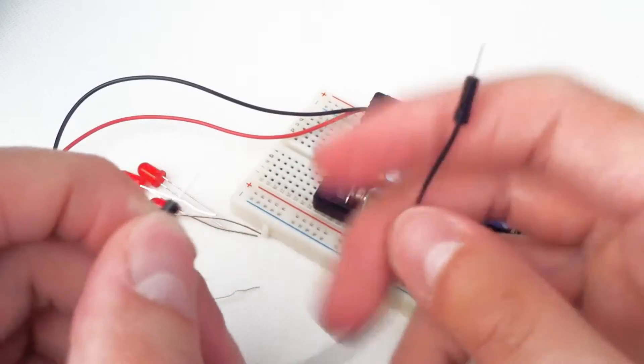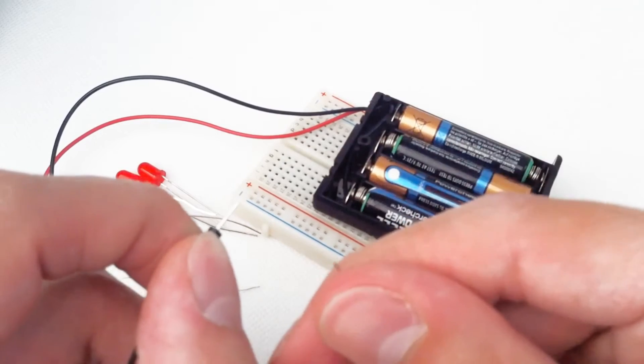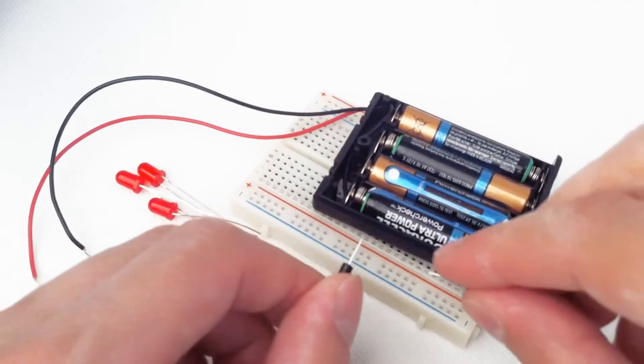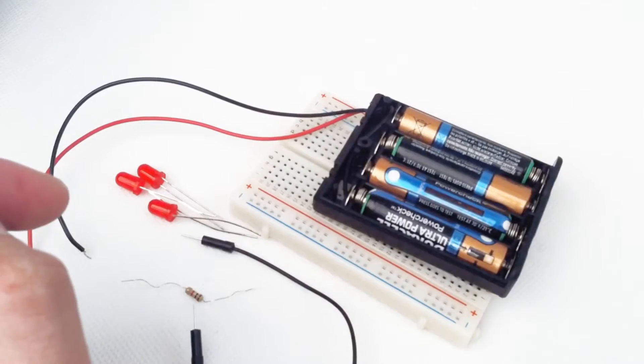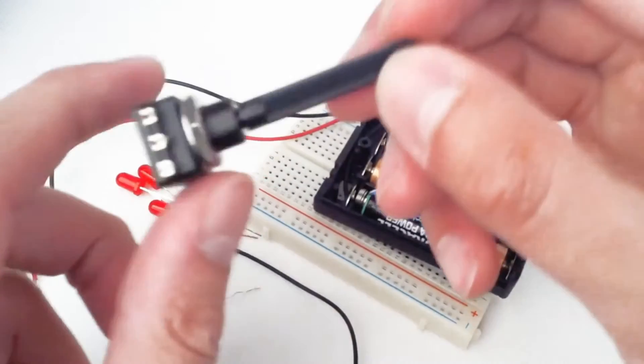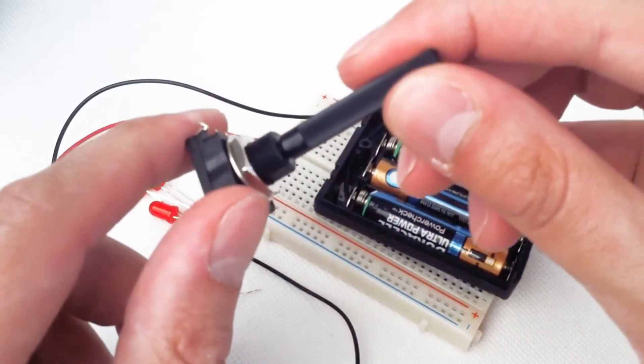A male to male jumper wire, and you can see these have points on either end so they let us connect two items in the breadboard. And this interesting component which is our 10k potentiometer or variable resistor.